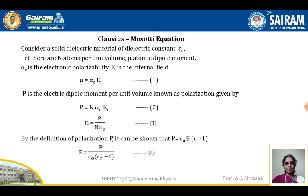We have seen that mu is equal to alpha_e into E_i — let that be equation 1. Now, capital P, the electric dipole moment per unit volume known as polarization, is given by P equals n times alpha_e times E_i — let that be equation 2.